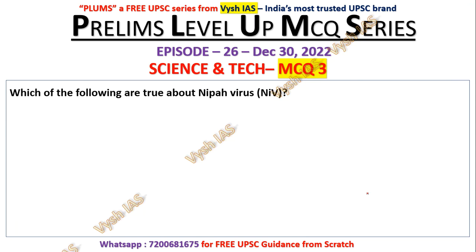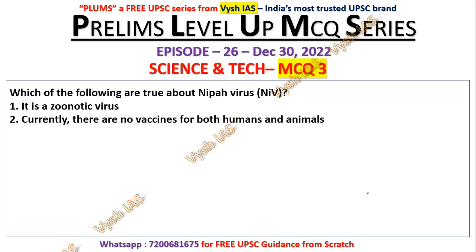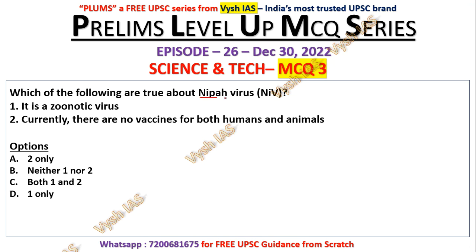Question number three: which of the following are true about Nipah virus? Statement one — it is a zoonotic virus. Statement two — currently there are no vaccines for both humans and animals. Options are: only two, neither, both, or only one. After COVID, the number of questions on vaccines, gene therapy, and research comparisons has increased significantly in UPSC. The answer is C — both statements are true.